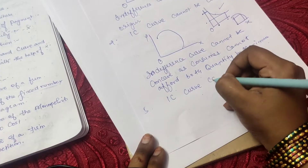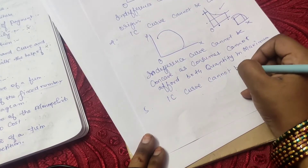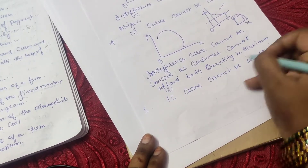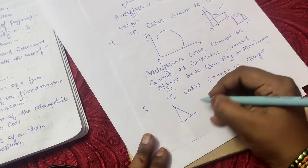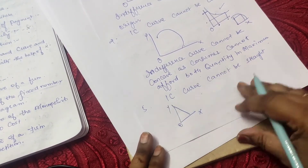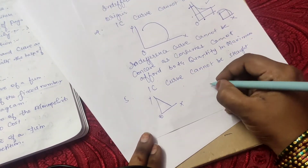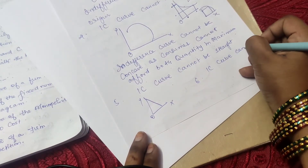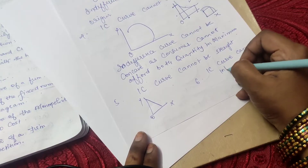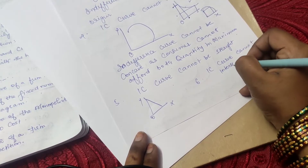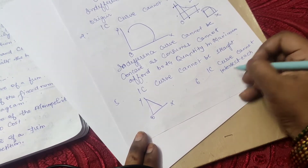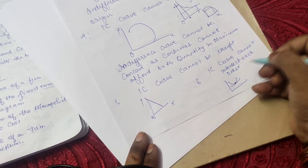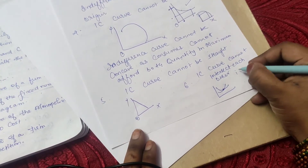Fifth feature: IC curve cannot be a straight line — draw that and note it. Sixth feature: IC curves cannot intersect each other. Draw the diagram showing that the combination of two commodities means there is no chance of the curves intersecting each other.